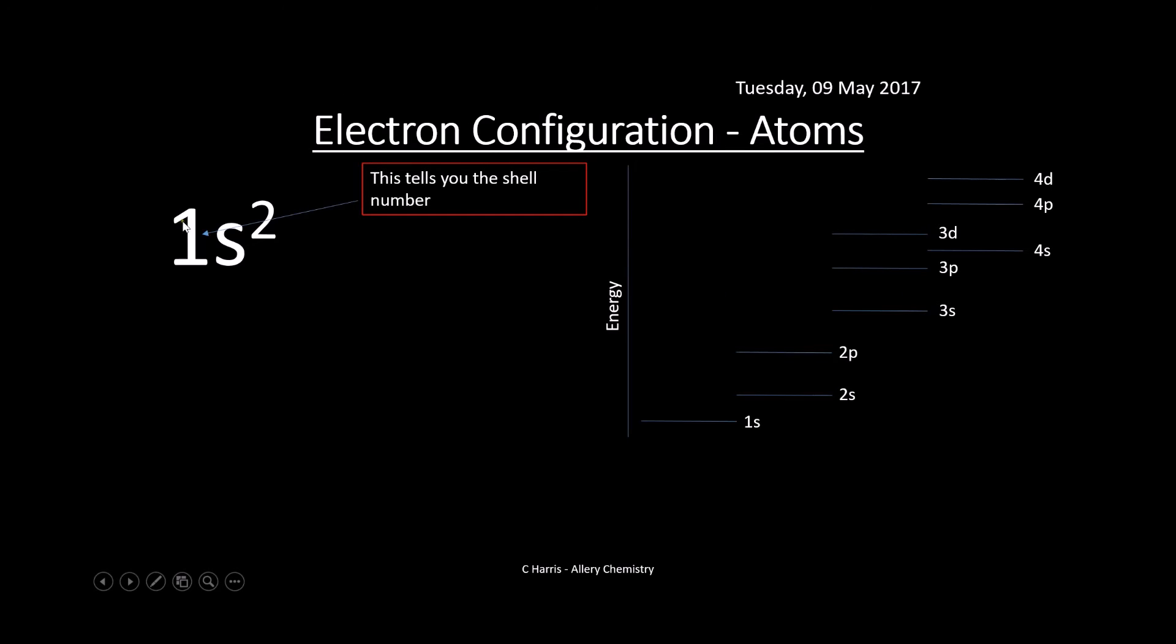So in this case, we're in the first shell in an S suborbital with two electrons inside it. That's what that means. Let's look at the electron configuration for iron. Iron's got 26 electrons and 26 protons because this is an element. First, 1S2, two electrons sitting there. Then 2S2, then 2P6.